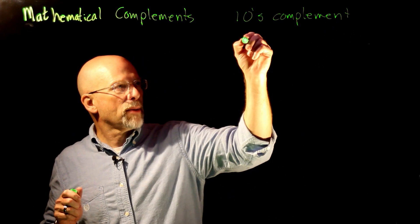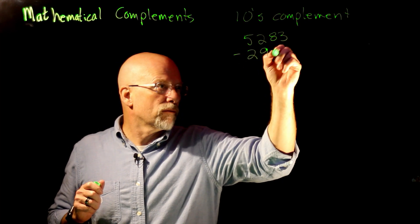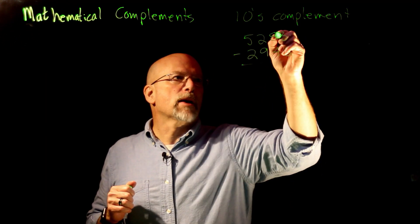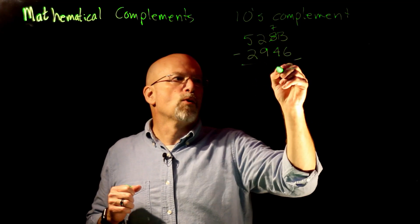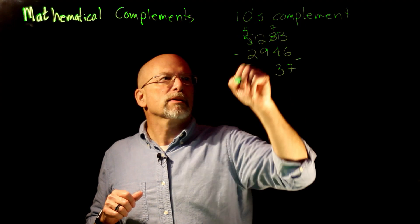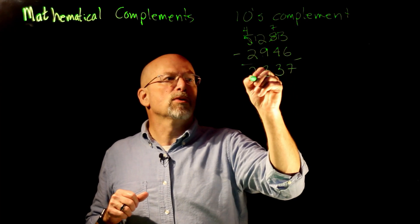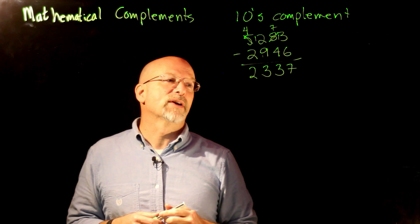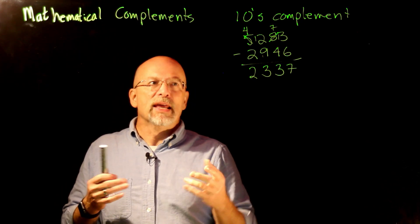Let's do something in tens complement and do a quick subtraction: 5283 minus 2946. First, we can't subtract 6 from 3 without a borrow, so we borrow one from 8, making it 13. 13 minus 6 is 7; 7 minus 4 is 3; 2 minus 9 requires another borrow — the 5 becomes a 4 and the 2 becomes 12. 12 minus 9 is 3; 4 minus 2 is 2. So 5283 minus 2946 is 2337.